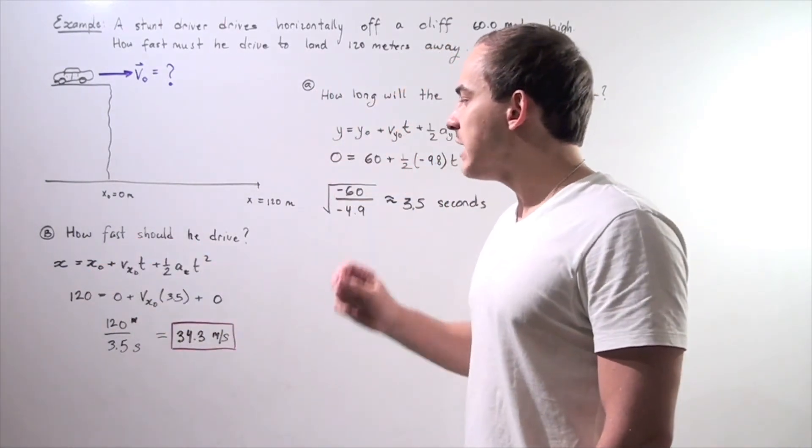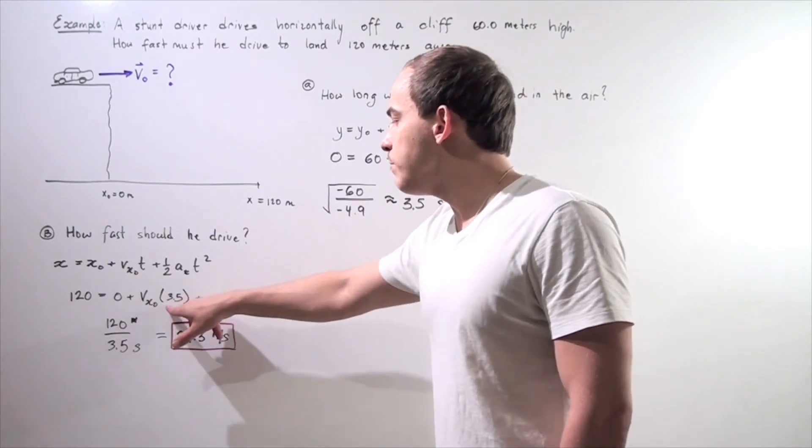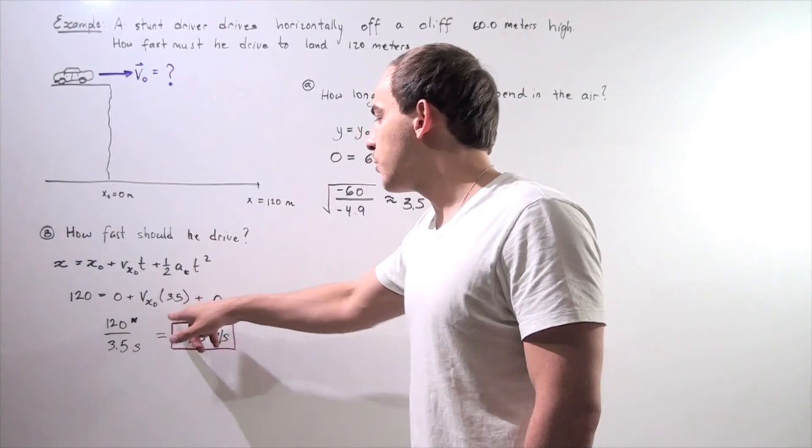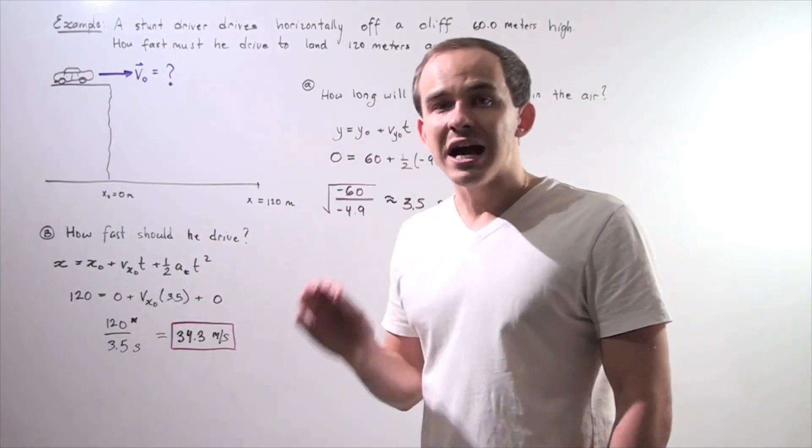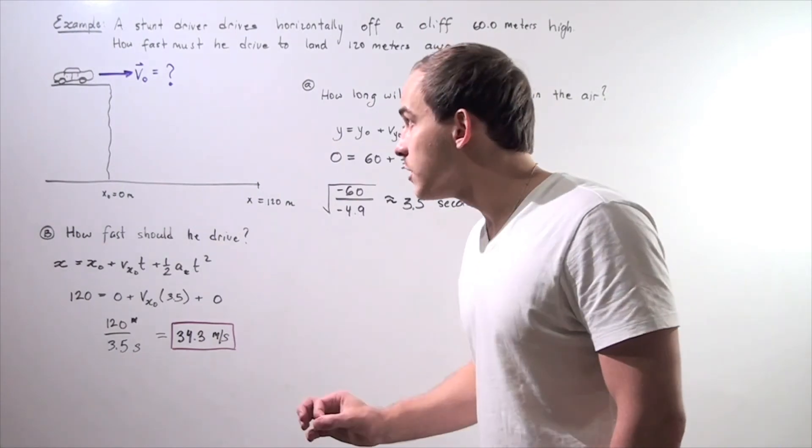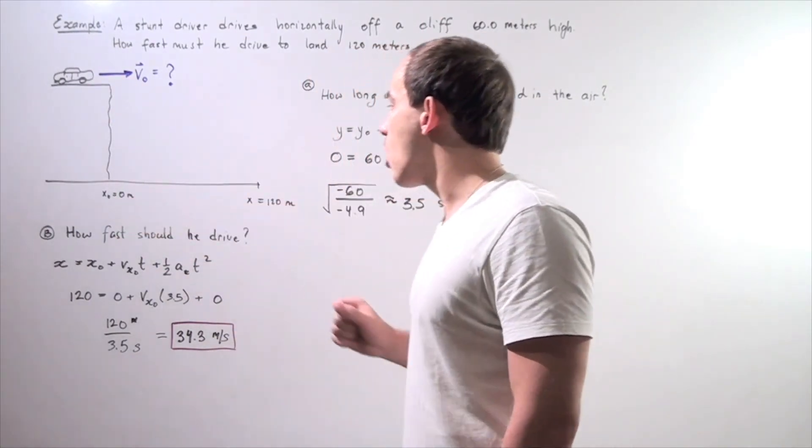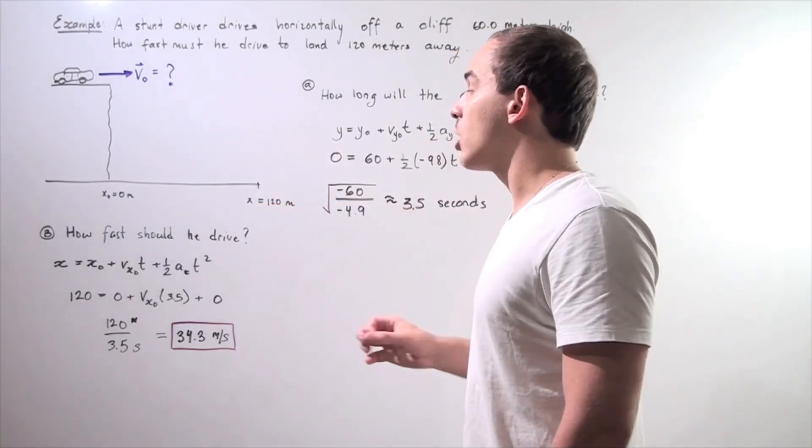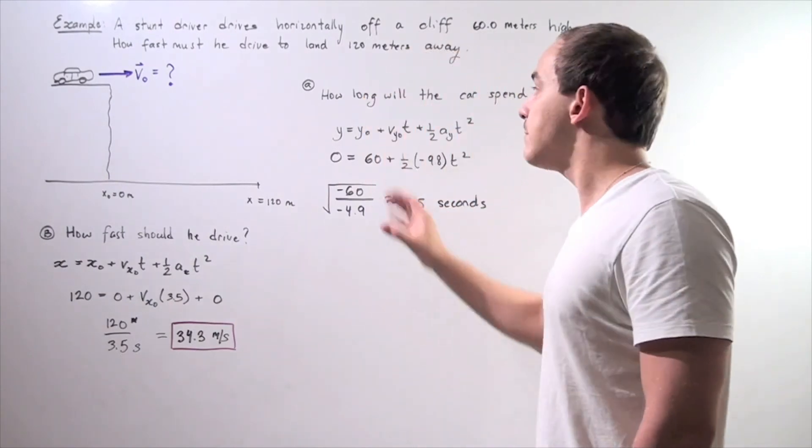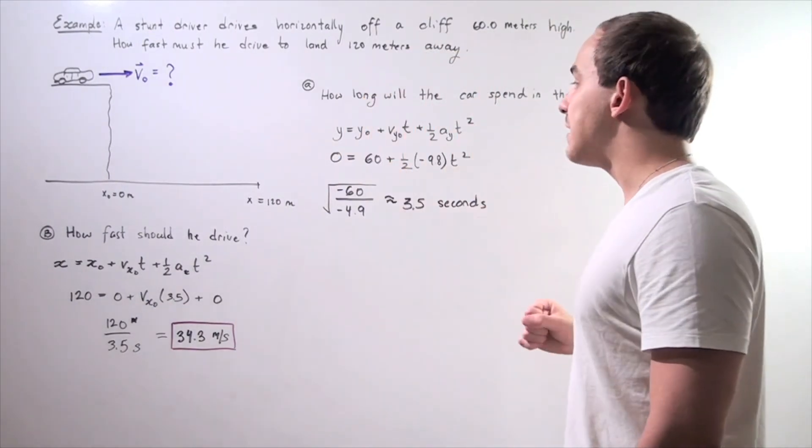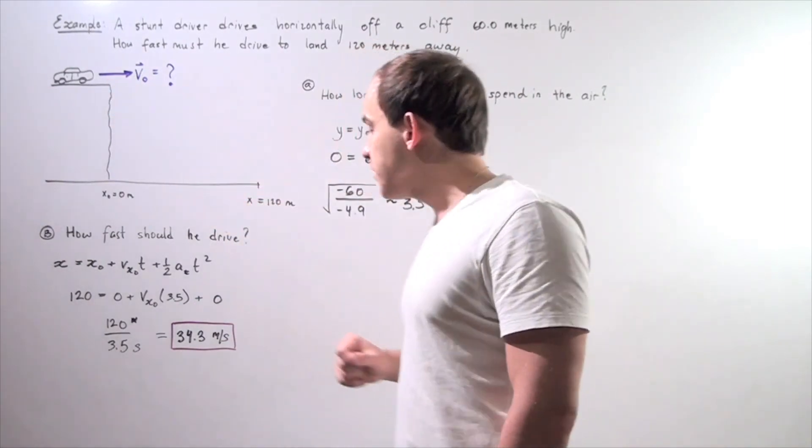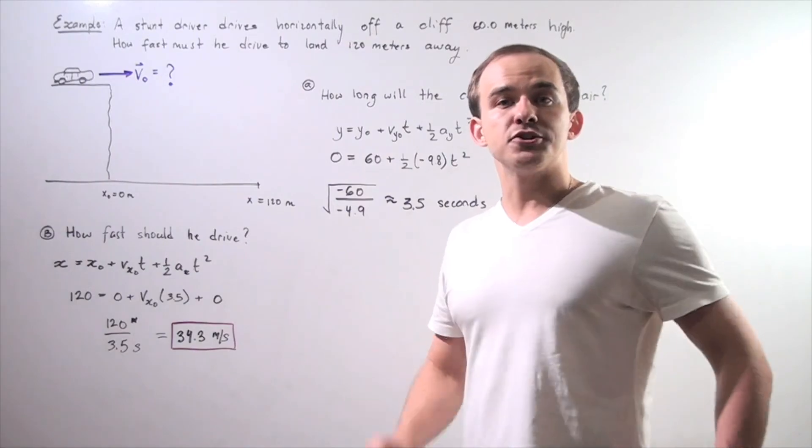This is 0, and we are left with 120 equals 3.5 multiplied by our unknown. So we divide both sides by 3.5, and we get approximately 34.3 meters per second. So in order for the car to get from our 0 mark to the 120 meter mark, knowing that our cliff is 60 meters high, and knowing that our time in the air is 3.5 seconds, our car must have a horizontal velocity of at least 34.3 meters per second.